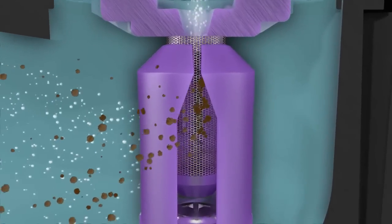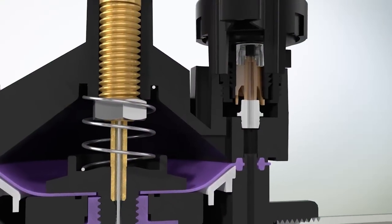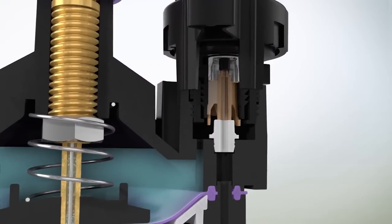When water enters the valve, grit and debris are trapped in the filter. Only clean water is sent to the top of the diaphragm.